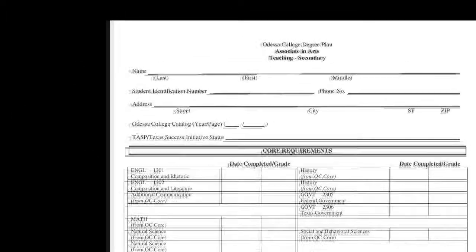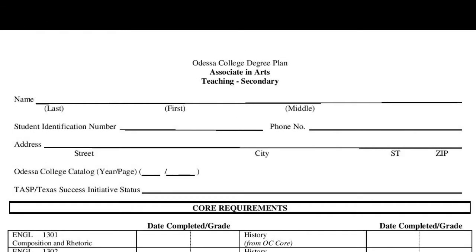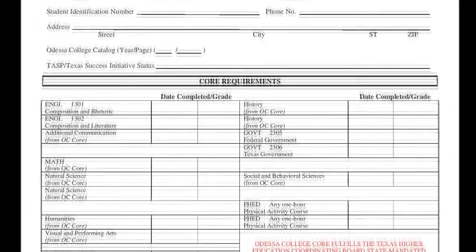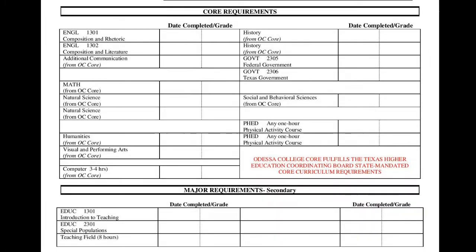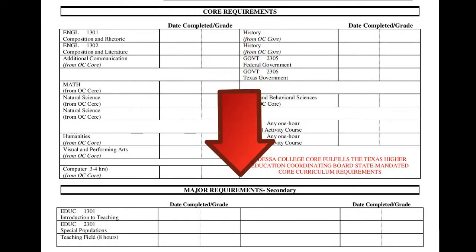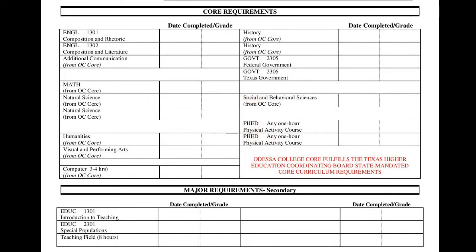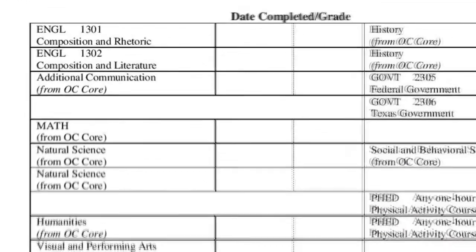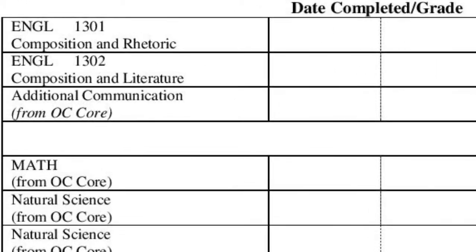At the top of the degree plan, you will notice information about yourself. When we personally meet, we will fill in this information together. You will notice there are two sections on the degree plan: the core requirements and the AAT major requirements. Let us first look at the core requirements for the AAT all-level Spanish degree.